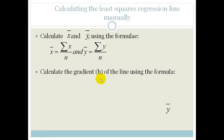So then we can calculate the gradient b of the line using the formula that b is the sum of x minus x average times by y minus y average all over the sum of x minus x average squared. Now I'm going to do another lesson where I'll show you how to do this on your calculators. So you don't have to panic, you don't have to do this manually.